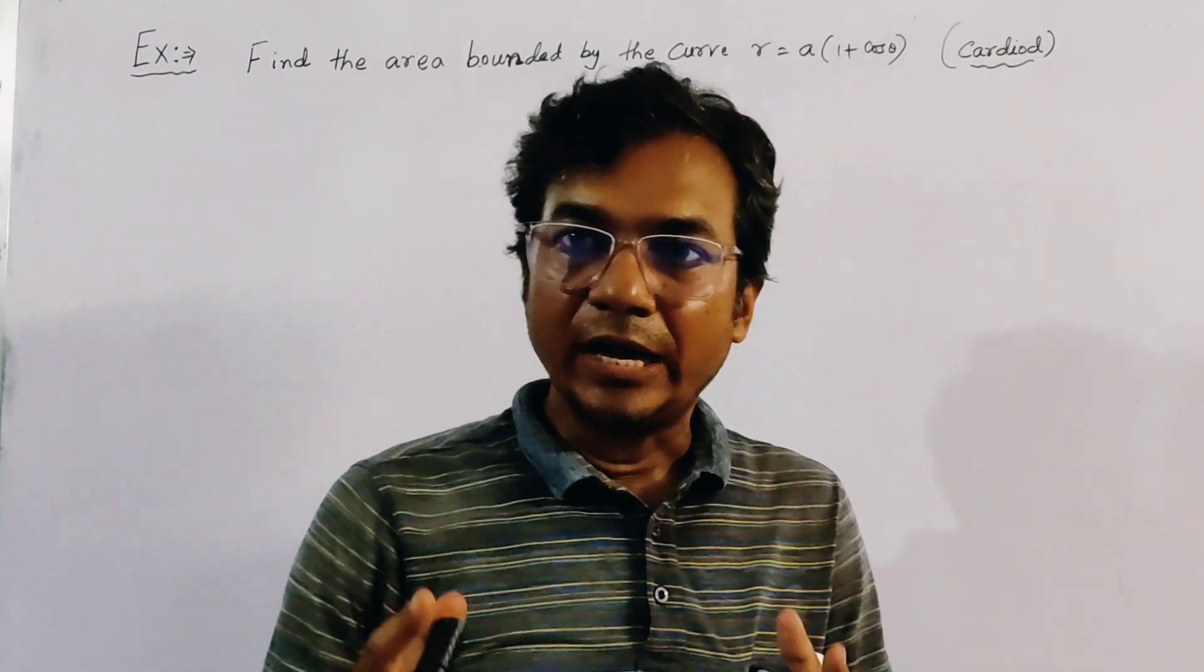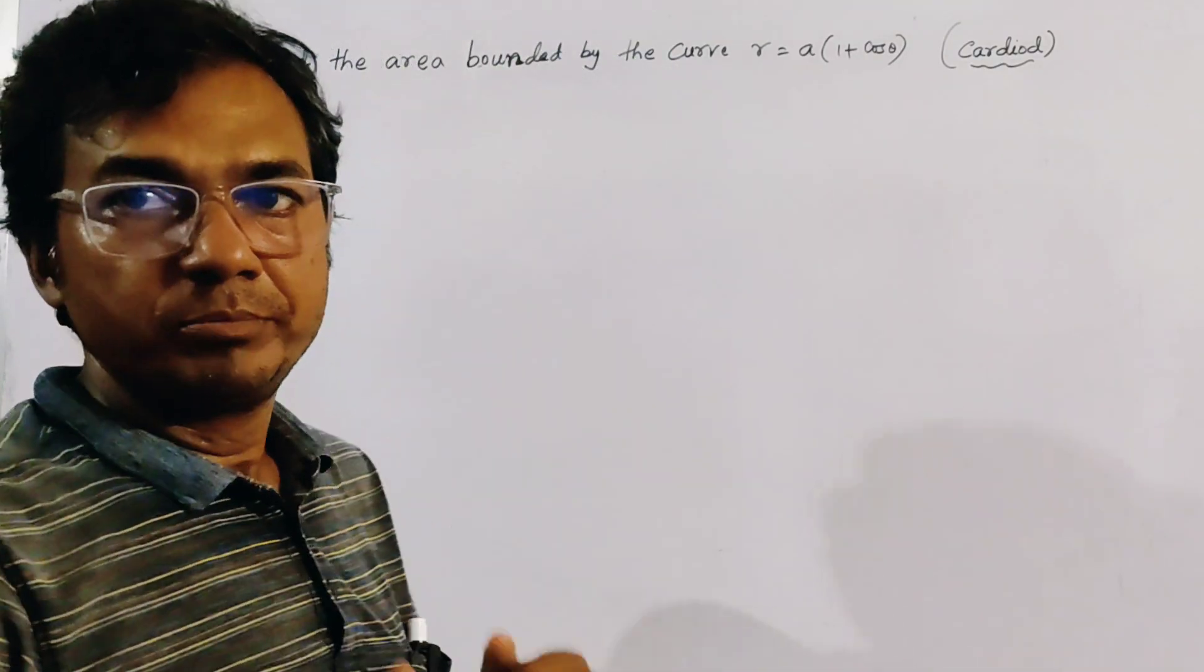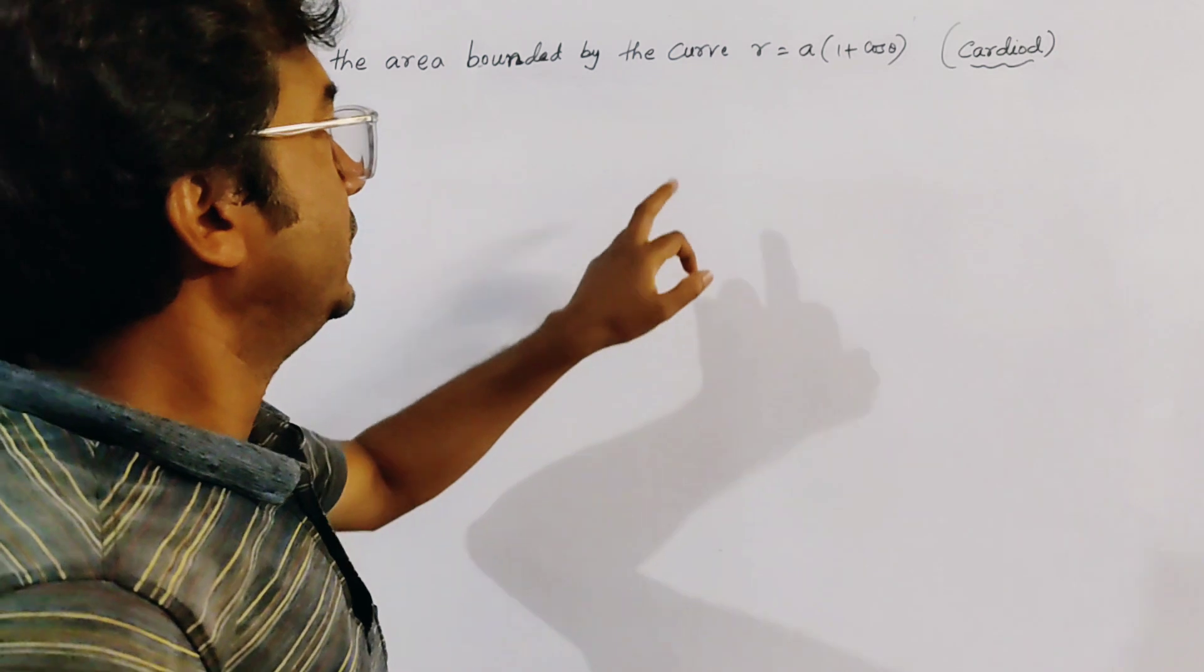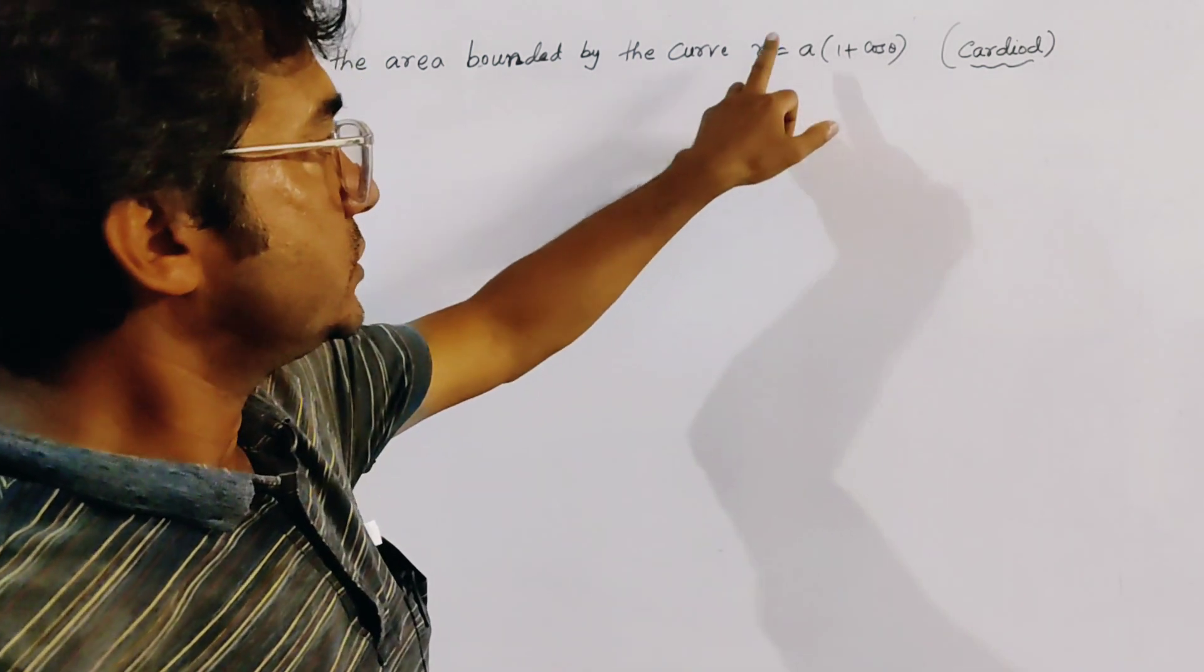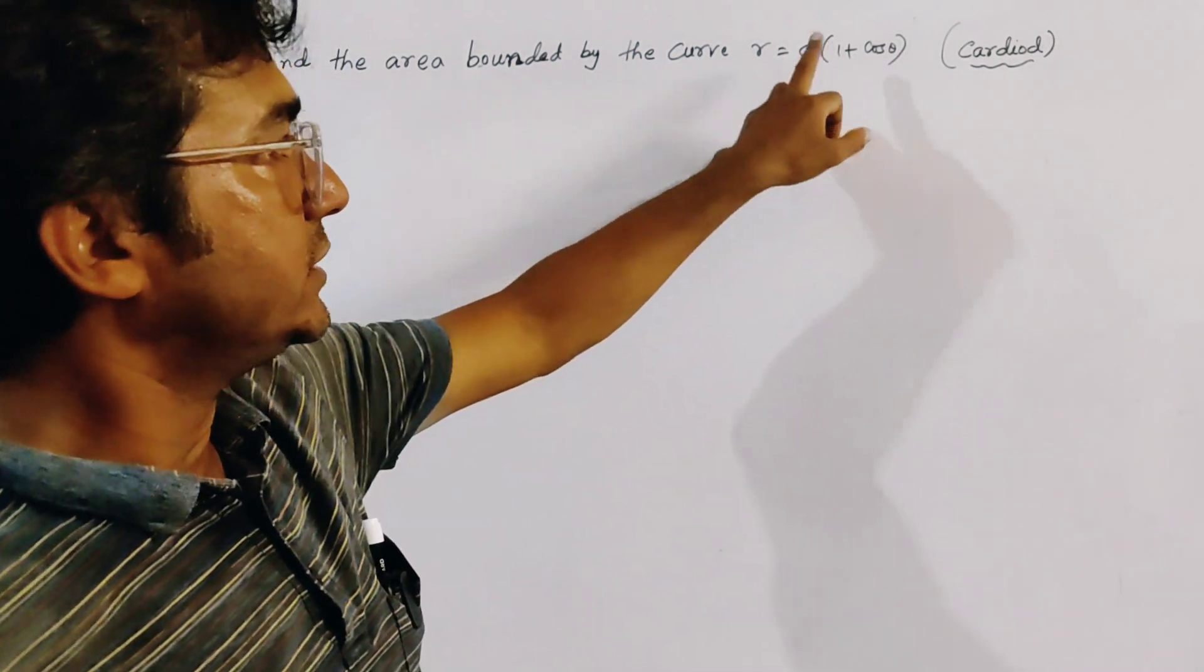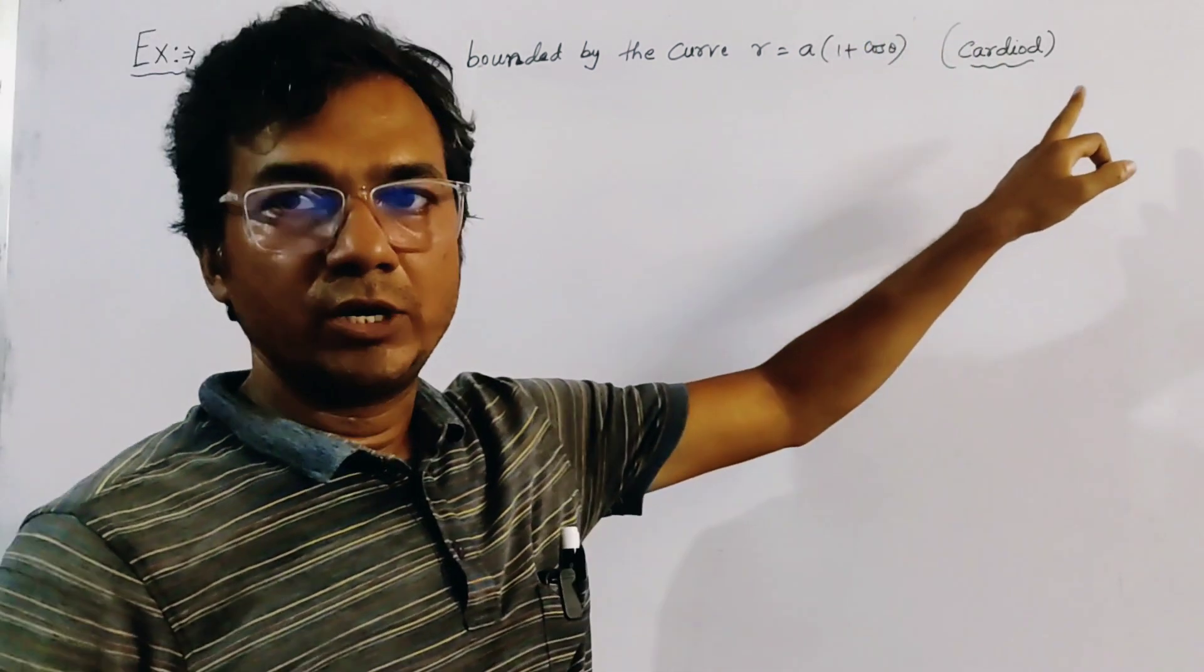Here we find the area of a plane curve bounded by the curve R equal to A times 1 plus cos theta, and this curve is known as a cardioid.